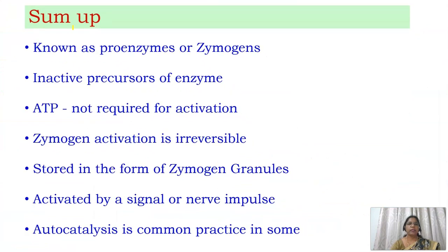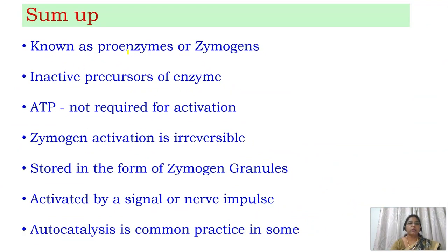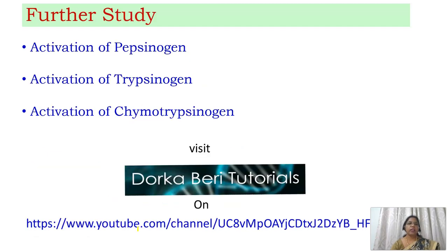In summary: inactive forms of enzymes are called pro-enzymes or zymogens. ATP is not required for activation. Zymogen activation is irreversible — the active form can never be converted back to the inactive form. Zymogens are stored in zymogen granules within acinar cells and released by a signal or nerve impulse. Autocatalysis is a common activation mechanism in some zymogens. In the next session, we will see the activation of pepsinogen, trypsinogen, and chymotrypsinogen.